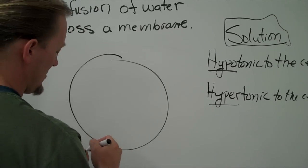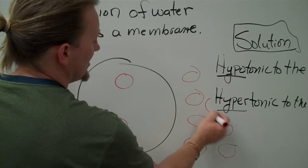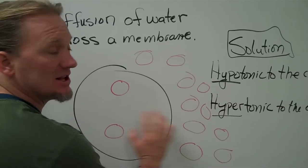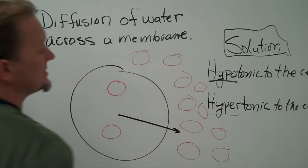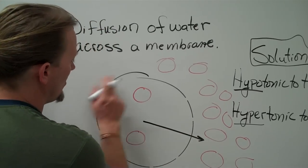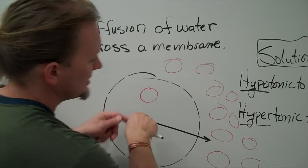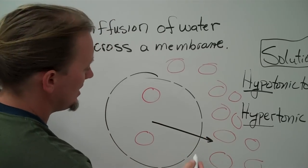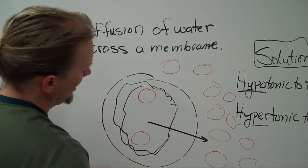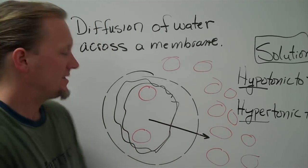Let's redraw this and look at a hypertonic condition. There's my cell. In this case, I've got a couple of solutes in here but a whole bunch outside. Now, what's going to happen to the water? It's going to try to equalize the concentrations, so water is going to flow out of this cell — and it can, because there are little pores in cells that allow water to move in and out. As the water moves out of the cell to equalize the concentration, this cell tends to shrink, getting smaller and smaller until the concentration of ions is the same inside as it is outside.